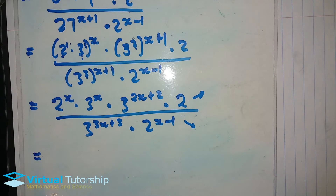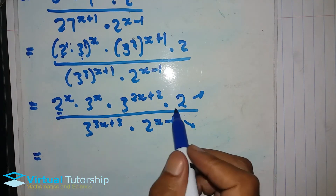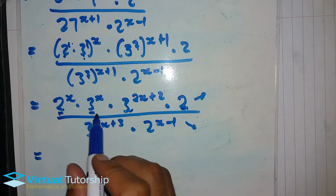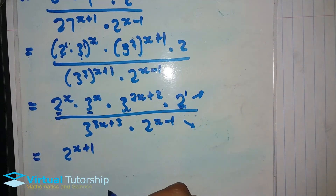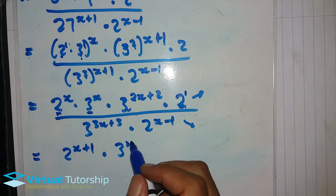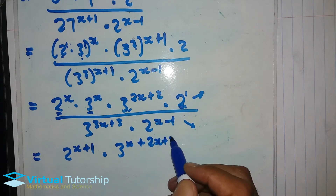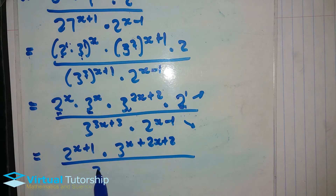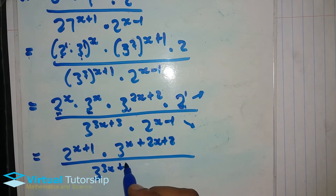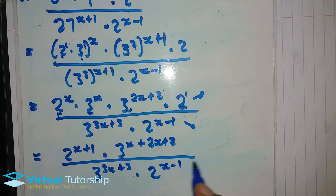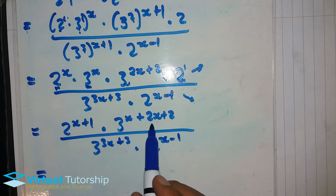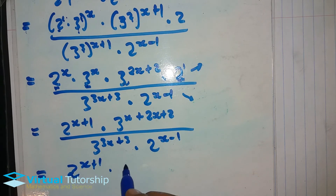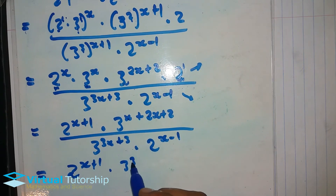Now pay attention to your numerator and denominator separately. In the numerator, multiply powers with the same base by adding exponents. For the 2s and the 3s, add: it's x plus 1 for base 2, and 3x plus 2 for base 3. On the denominator, simplify: 3 times x plus 1 gives 3x plus 3. Then, x plus 1 minus x plus 1 is 3x plus 2.